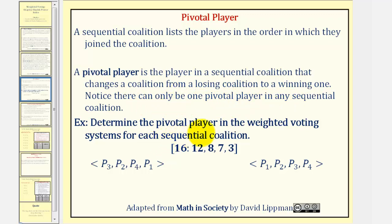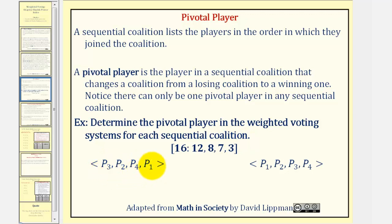A pivotal player is a player in a sequential coalition that changes a coalition from a losing coalition to a winning one. Notice there can only be one pivotal player in any sequential coalition. Let's determine the pivotal player in the weighted voting system for each sequential coalition. We'll add the weight of each player in each particular order to see which player allows the coalition to reach the quota, in this case of sixteen.